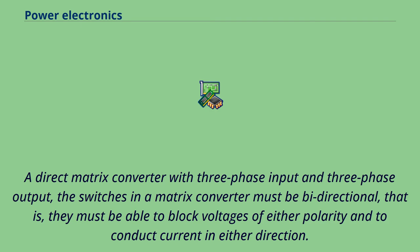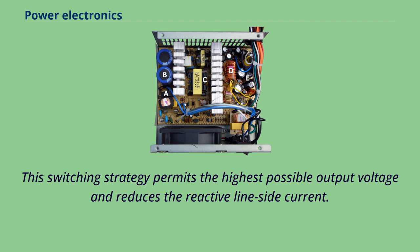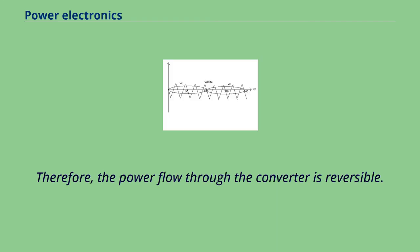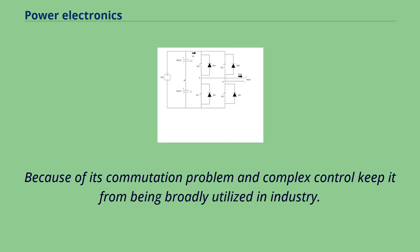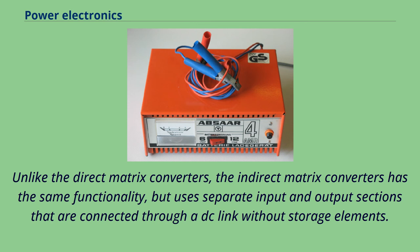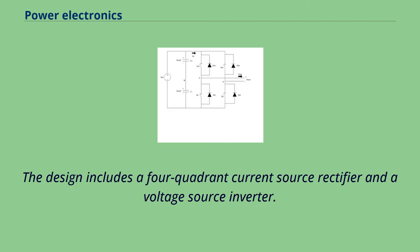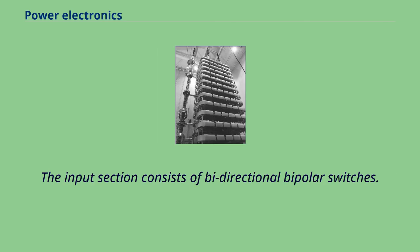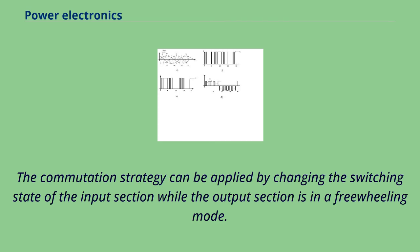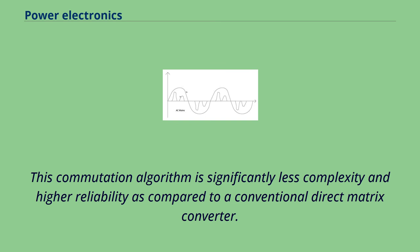In a direct matrix converter with three-phase input and three-phase output, the switches must be bidirectional—able to block voltages of either polarity and to conduct current in either direction. This switching strategy permits the highest possible output voltage and reduces the reactive line-side current, making power flow through the converter reversible. However, commutation problems and complex control keep it from being broadly utilized in industry. Unlike the direct matrix converter, the indirect matrix converter has the same functionality but uses separate input and output sections connected through a DC link without storage elements, incorporating a four-quadrant current source rectifier and a voltage source inverter. The commutation strategy can be applied by changing the switching state of the input section while the output section is in freewheeling mode, resulting in significantly less complexity and higher reliability.